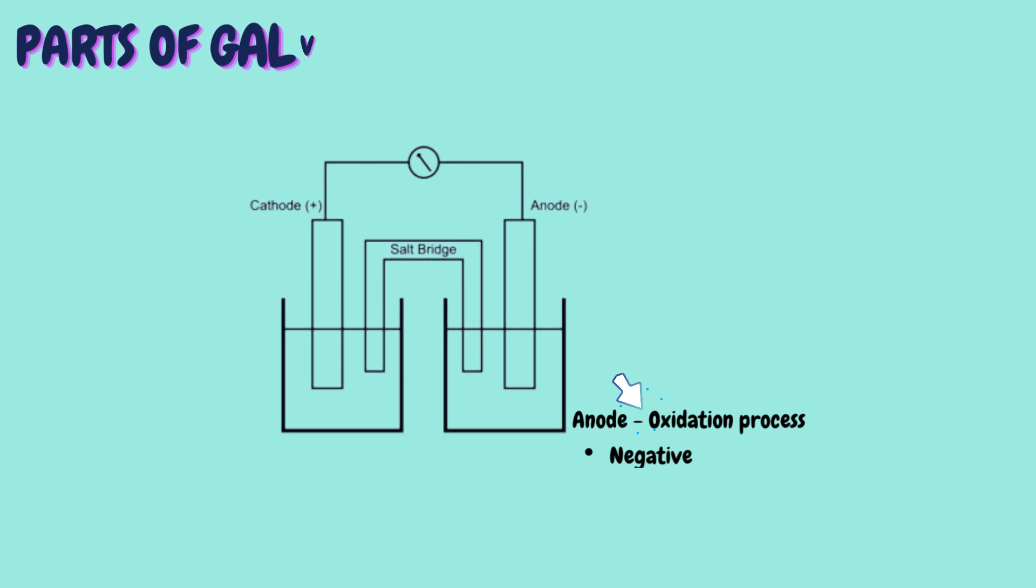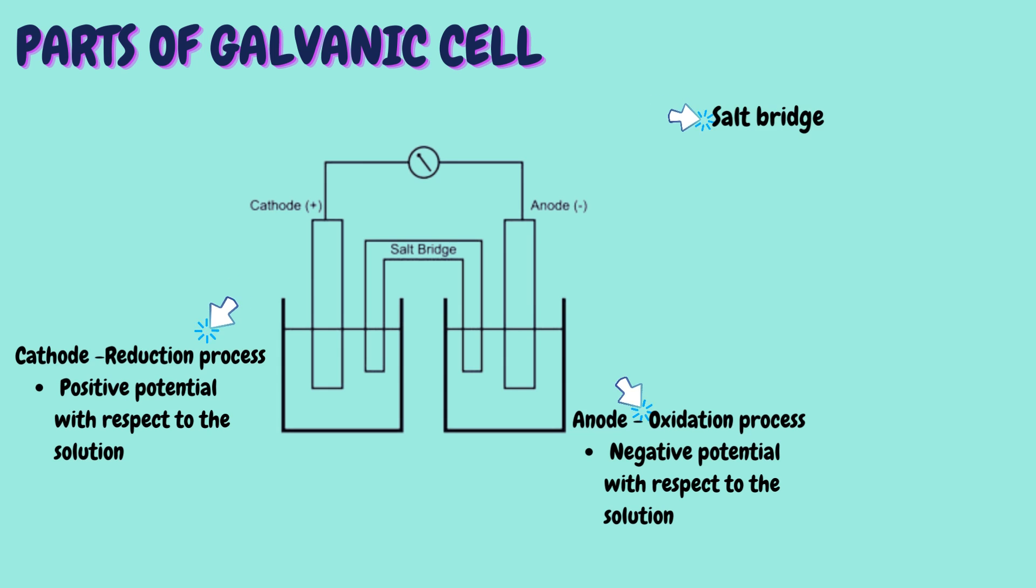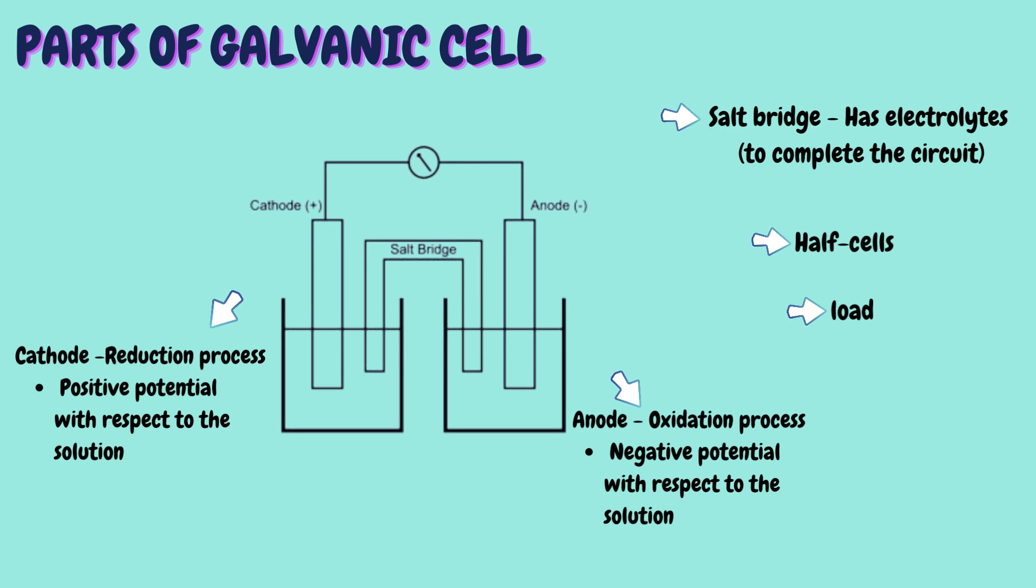Parts of galvanic cell. Anode, the electrode in which oxidation will occur. It has a negative potential with respect to the solution. Cathode, the electrode in which reduction will occur. It has a positive potential with respect to the solution. Salt bridge consists of the electrolytes, which are used to complete the circuit. Half cells and load.